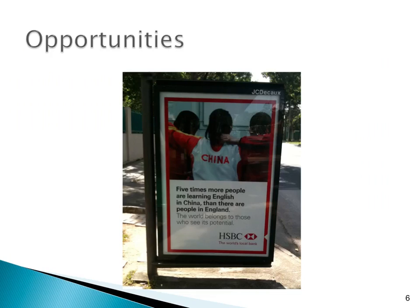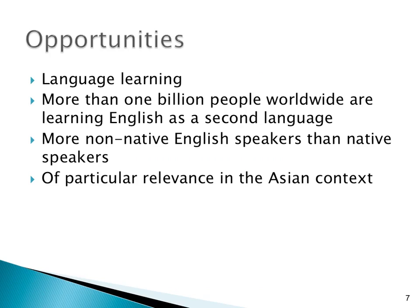Why do we bother about grammatical error correction? Well, as this photo shows, five times more people are learning English in China than there are people in England. Grammatical error correction can facilitate language learning. There are more than one billion people worldwide who are learning English as a second language today, and indeed there are more non-native English speakers than native English speakers. This problem is of particular relevance in the Asian context because many of these non-native English speakers reside in Asia and in this region.